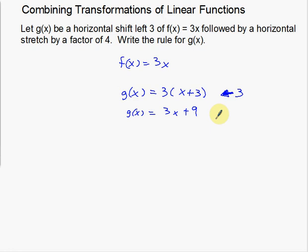Now for the second transformation: a horizontal stretch by a factor of 4. If you horizontally stretch something, horizontal stretching and compressing only affects the slope of your function — it only affects the slope. So in our case, it's only going to affect the 3 here. My two choices are to multiply or divide by 4. If I horizontally stretch a function, the slope is actually going to go down, so I need to divide by 4. I'm going to take my 3 and divide by 4.